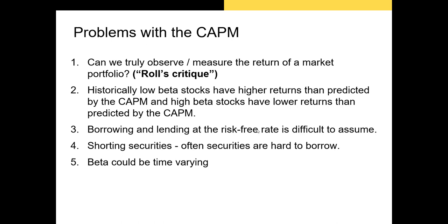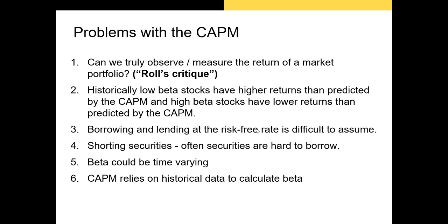We're assuming that beta is constant from one period to the next. However, a stock's beta can change dramatically, especially if the firm is changing its operations or there's some crisis occurring in the real world, like a coronavirus outbreak. The historical beta might not be the future beta — we're using historical data that might not reflect the firm's future. Maybe the firm changes from a camera company into a blockchain company or a drug company.